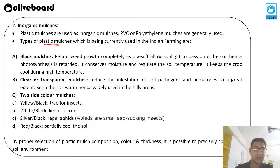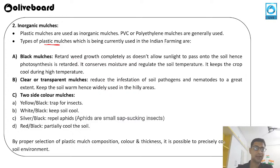The first type of plastic mulch is black mulch. It retards weed growth completely and does not allow sunlight to pass onto the soil, reducing photosynthesis in weed plants. It also helps in conservation of moisture and regulates soil temperature, keeping the crop cool during high temperature.